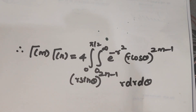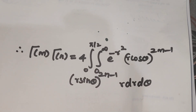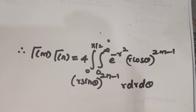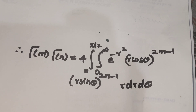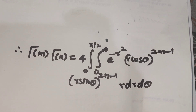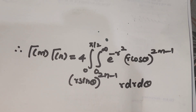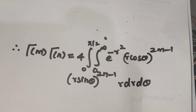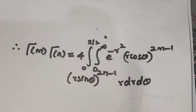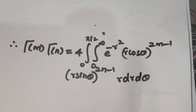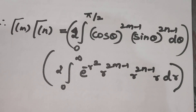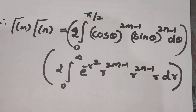Therefore, gamma of m into gamma of n is equal to 4 times the integral from 0 to pi by 2, integral from 0 to infinity, of e power minus r square, (r cos theta) power 2m minus 1, (r sin theta) power 2n minus 1, r dr d theta. Now we split the above integral.